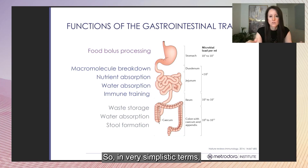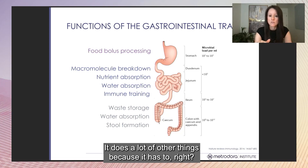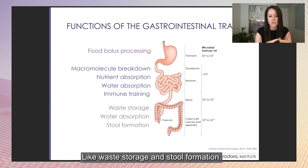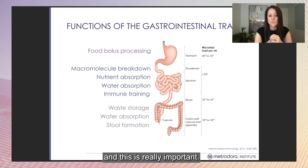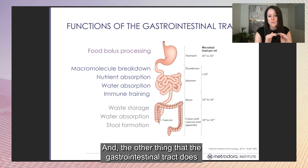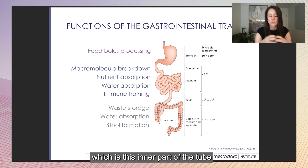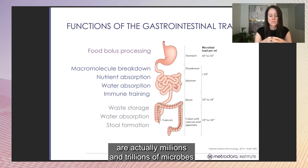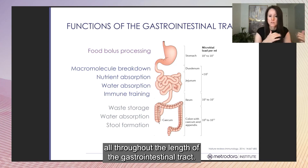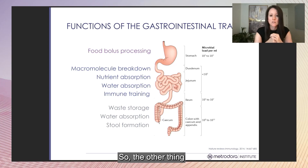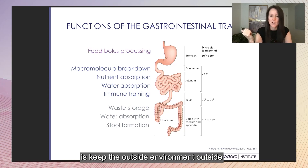In simplistic terms, the function of the gastrointestinal tract is to absorb nutrients from our diet and water. It also handles waste storage and stool formation. It trains our immune system — this is really important. And the gastrointestinal tract actually brings the outside environment into us. The lumen, the inner part of the tube, is the outside environment, and what lives there are millions and trillions of microbes throughout the length of the gastrointestinal tract.